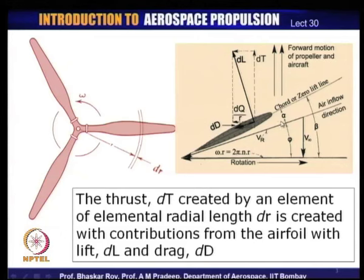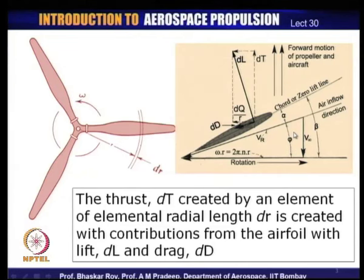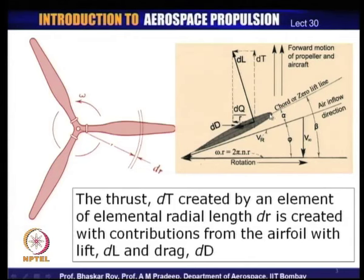The propeller, along with the aircraft, is moving with a forward velocity V_infinity — the relative forward velocity with which air meets the propeller. This is the rotational velocity of the propeller section. The two together make up the resultant velocity V_R, which is incident on the propeller at this particular section. This resultant flow is at an angle phi with respect to the peripheral or tangential direction. The blade section is set at a blade setting angle beta, so beta minus phi gives alpha — the angle of attack of this blade section.